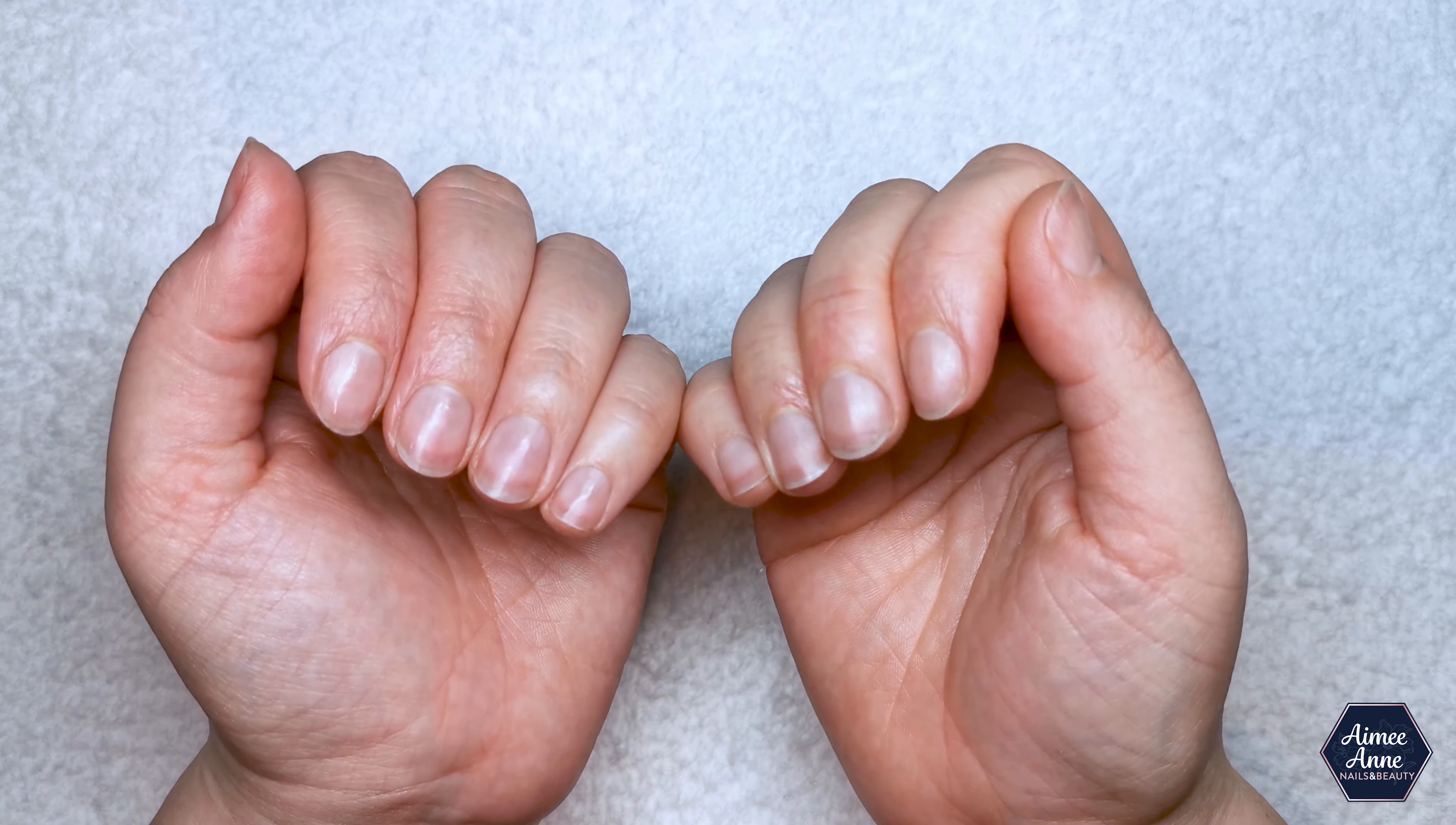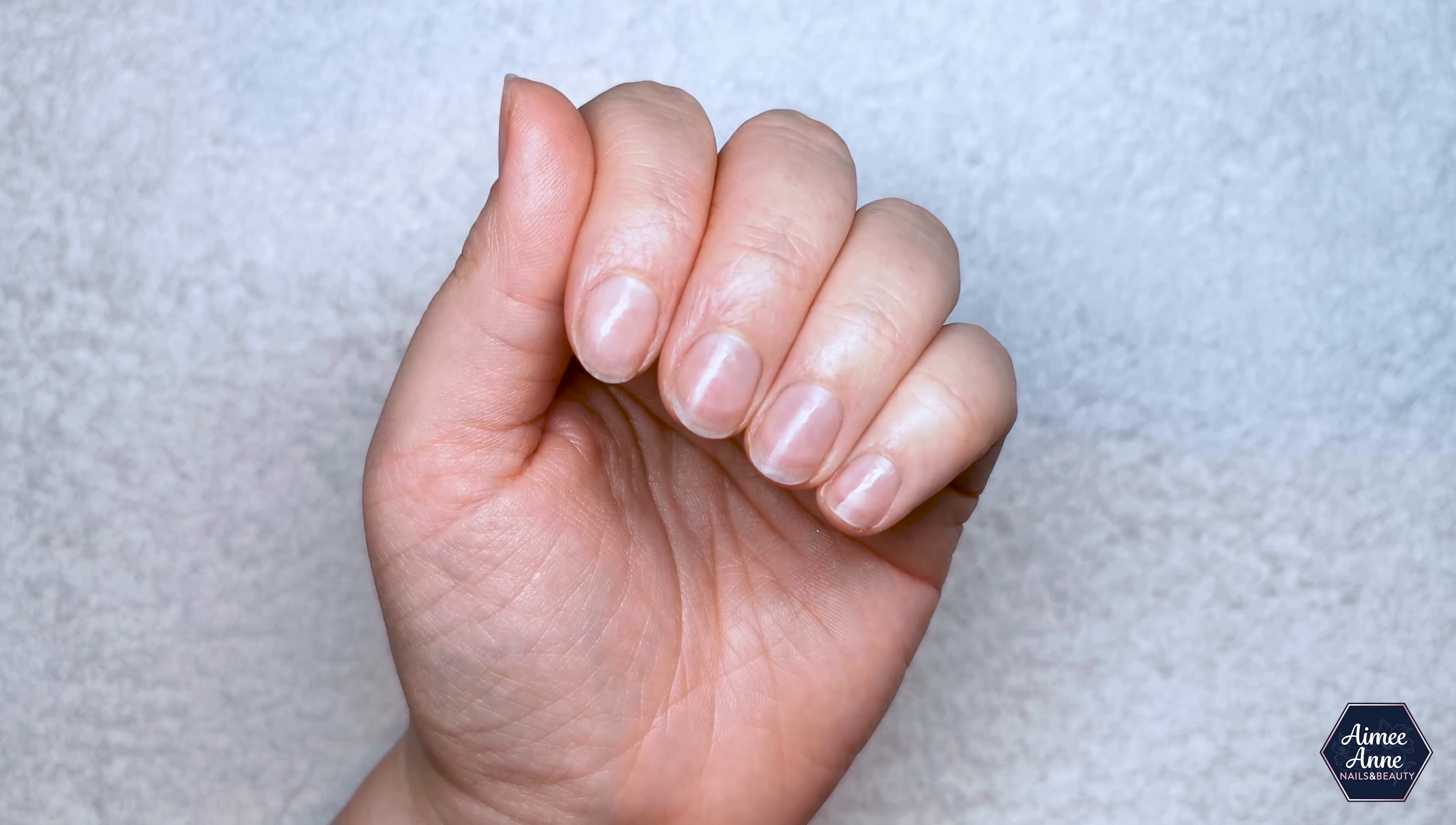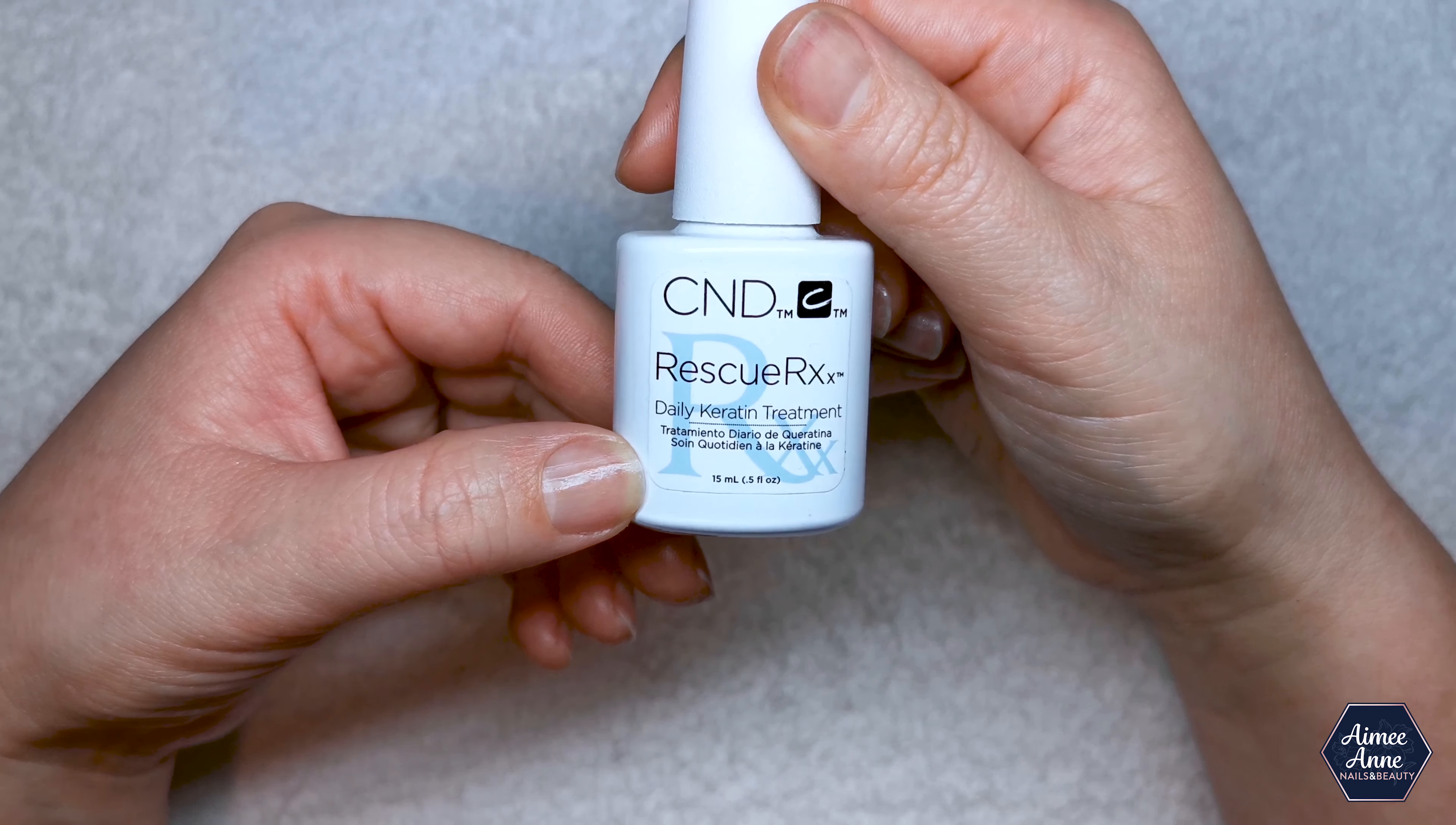So here we are with my hand cream all rubbed in. I hope you would agree that my nails and cuticles look so much better for a DIY at-home manicure. My hands really are so soft. You do have some options to add on to this. You have your CND Rescue RXX daily keratin treatment. This would help with your damaged, dry, or bendy nails. If you apply this daily for a week, you'll already notice a difference. If you continue for four weeks, most damage will be gone, depending on the severity.